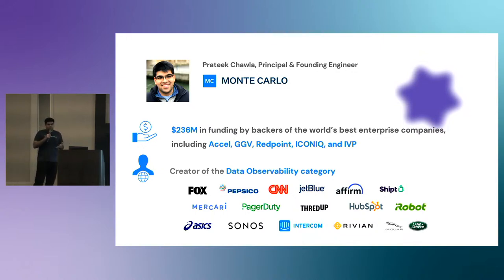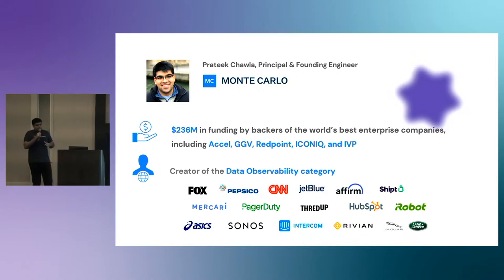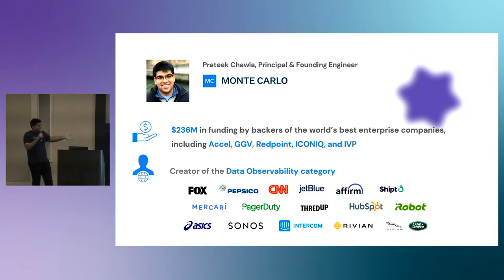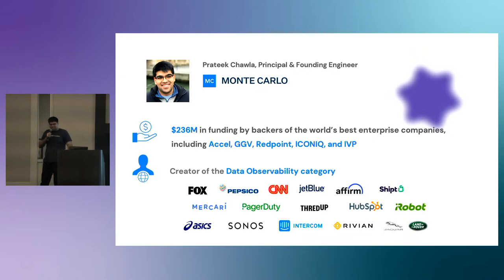For those of you who are unfamiliar, Monte Carlo is a Series D data reliability startup that basically coined the term and category of data observability. We provide an end-to-end coverage solution that integrates with many data tools across different data stacks to cover the entire data lifecycle. We've had the fortunate experience of working with many customers — including Fox, Pepsi, JetBlue, Vimeo, and many more — to bring reliability to their pipelines through proactive monitoring, alerting, and lineage.